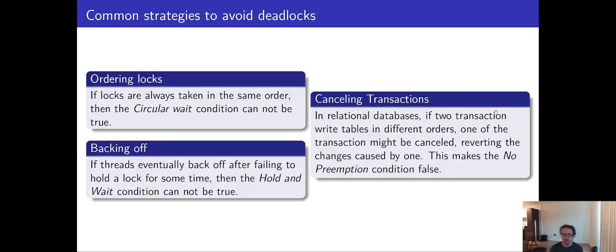Another strategy is canceling transactions. So this is a databases example. If two transactions try to write tables in different orders, one of these transactions could be canceled, which will revert the changes that take place. This is an example of introducing preemption to your condition. You have a case where we can preempt our write. We'll just cancel one of them and force it to revert its changes and carry on as we did before. Maybe we reissue the transaction.